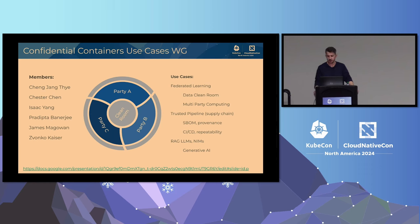And of course, generative AI — RAG, LLMs, NIMs — how to properly deploy and secure them. Essentially, all of those use cases have one thing in common: we have different parties running in the enclave, and we need to make sure that we are providing a confidential clean room for all of those parties involved.